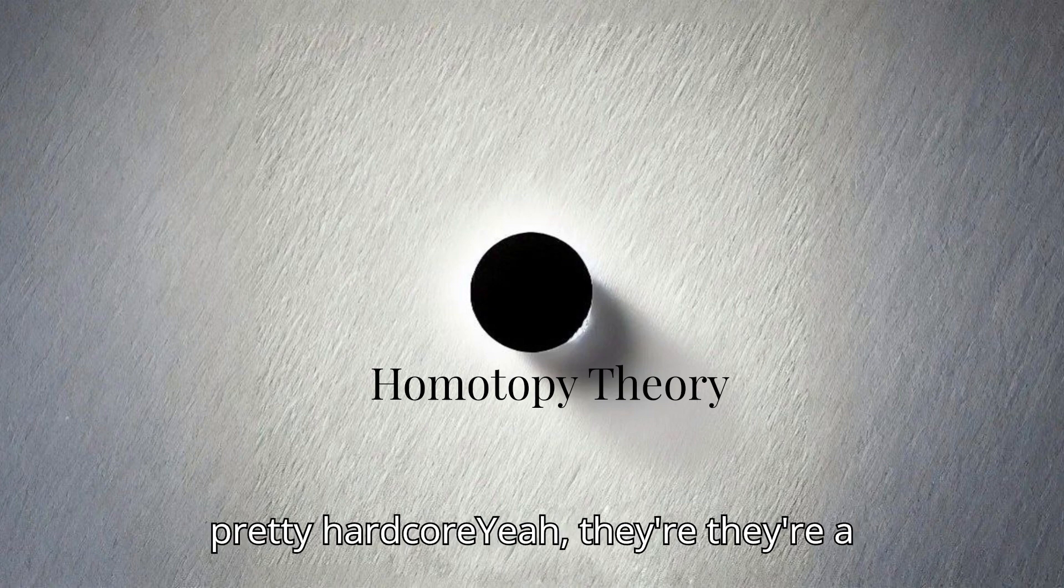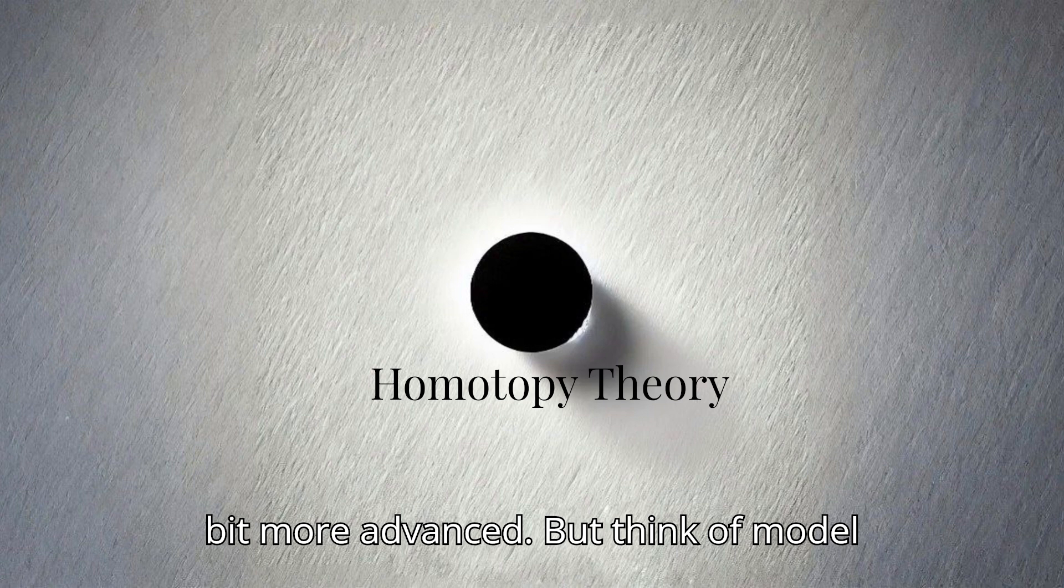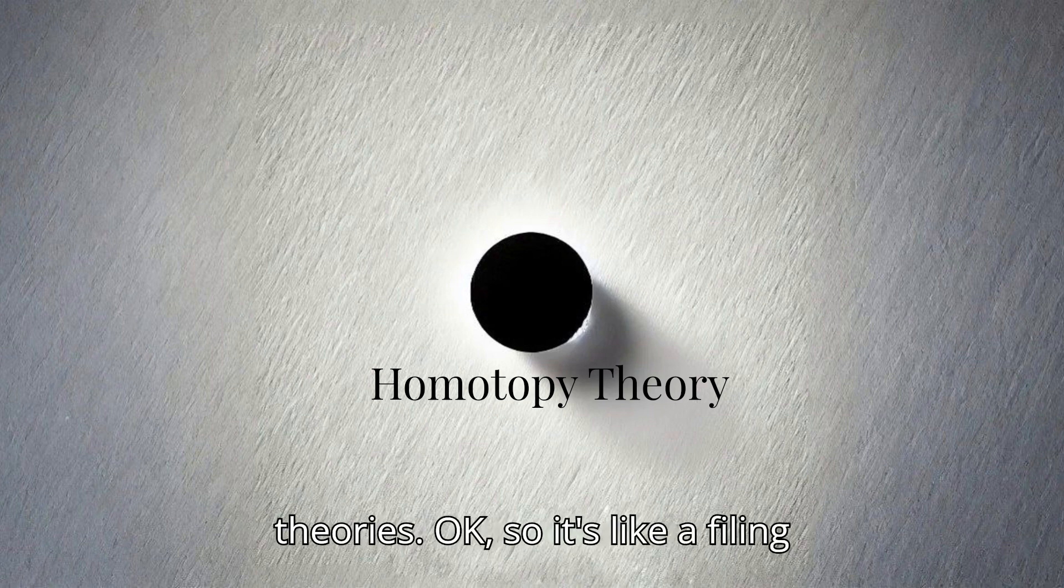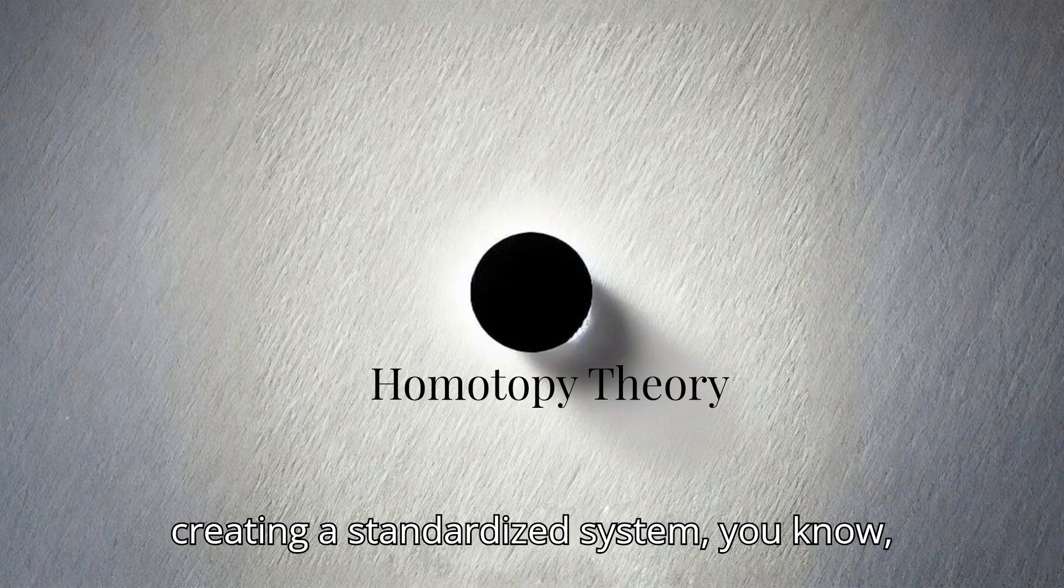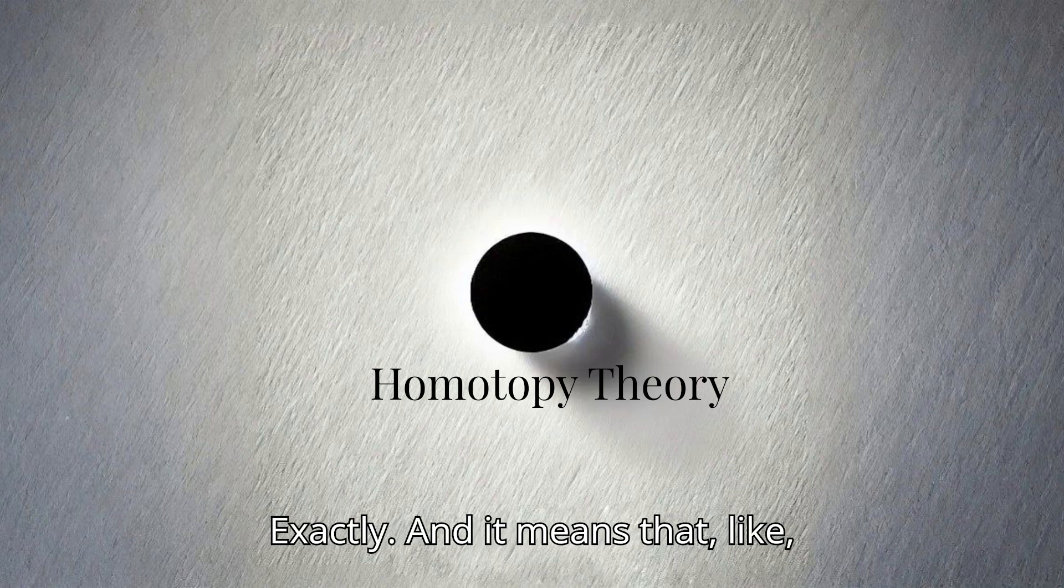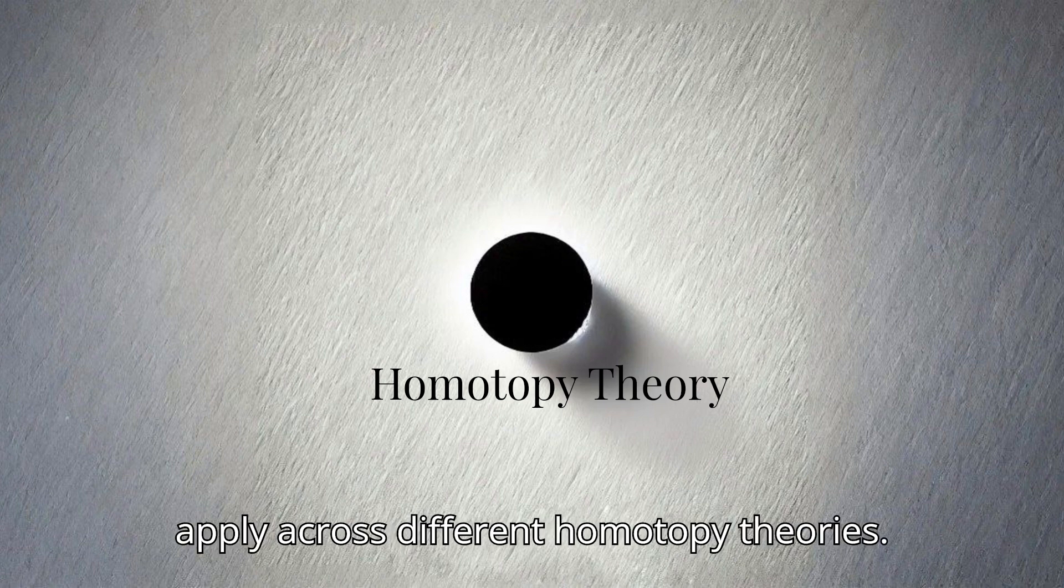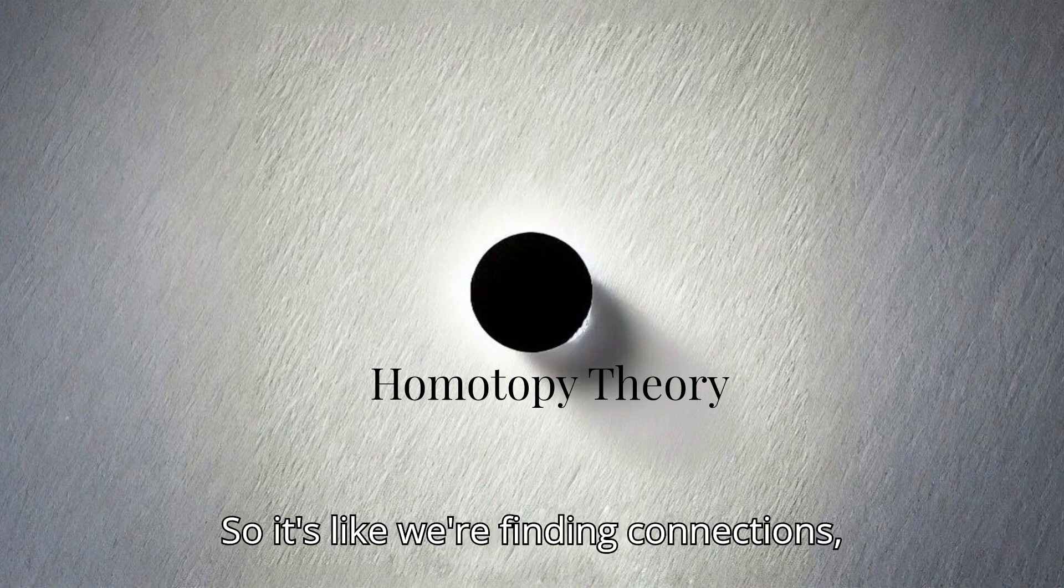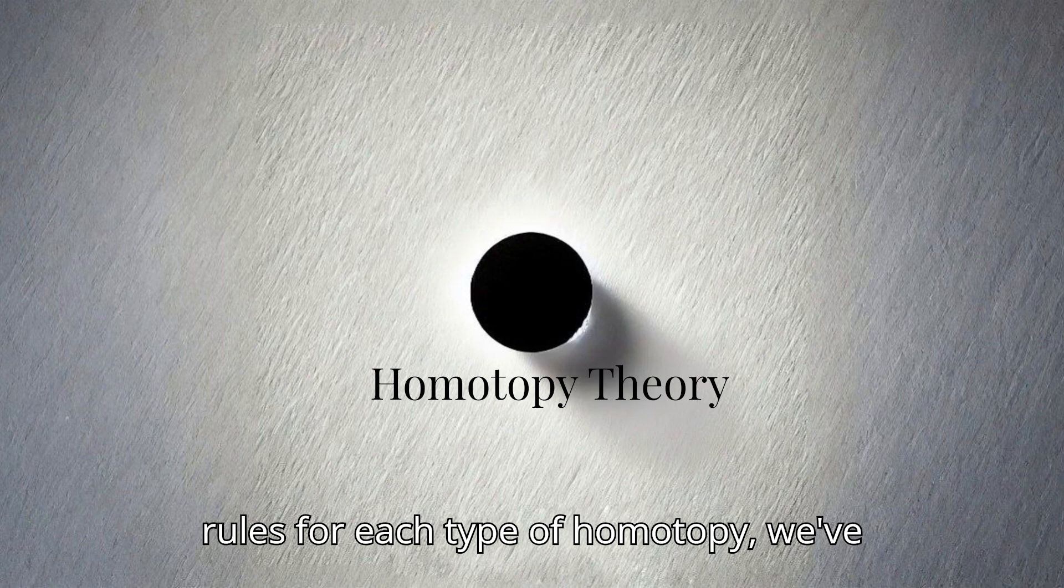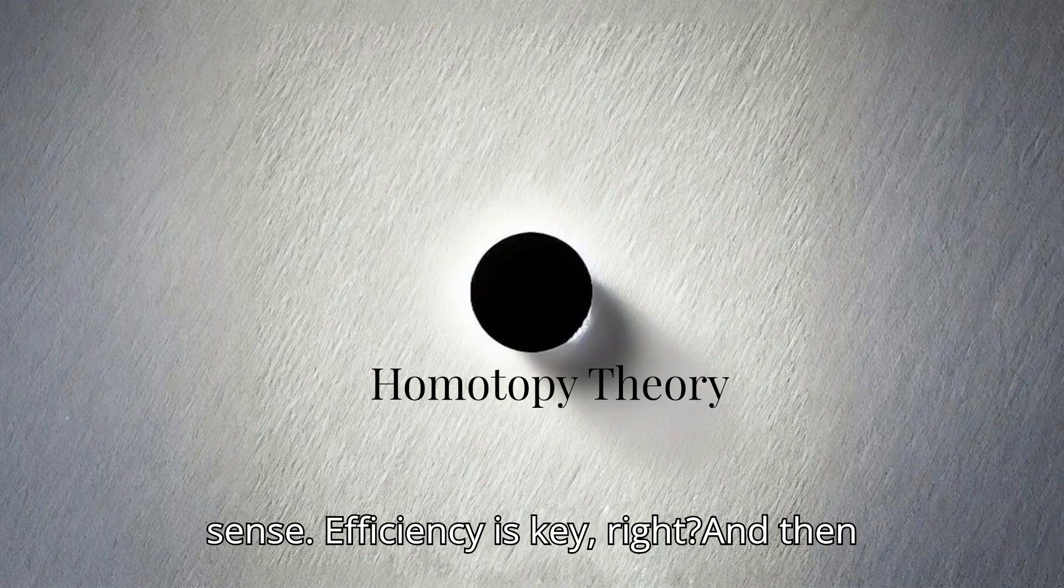Yeah, they're a bit more advanced. But think of model categories like a way to organize all these different types of homotopy theories. Okay, so it's like a filing system. Yeah, kind of. It's like we're creating a standardized system, a universal language for shape-shifting. Exactly. And it means that mathematicians can prove these general theorems, these big ideas that apply across different homotopy theories. So it's like we're finding connections, seeing the bigger picture. Exactly. So instead of having a bunch of separate rules for each type of homotopy, we've got this overarching framework that ties it all together. Okay, that makes sense. Efficiency is key.